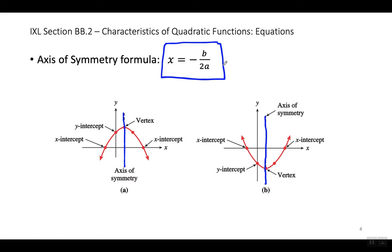After you use it two or three times, it should be no problem to memorize. Everyone should definitely memorize this formula because we are going to use it on a lot of questions. To get the axis of symmetry, you do X equals negative B over 2A. Esta es una formula que definitivamente deben memorizar porque se usa mucho. Y esta formula no se lo van a dar en los exámenes. Después que lo usan dos o tres veces, lo van a tener memorizado.